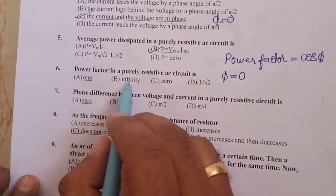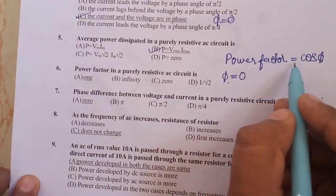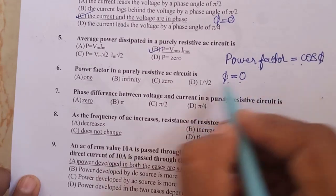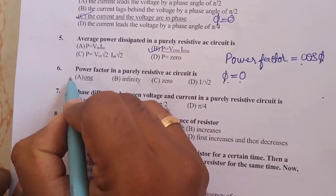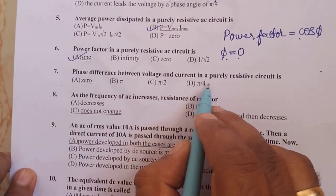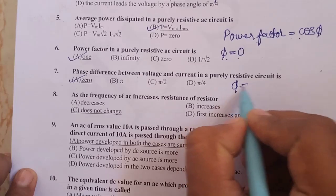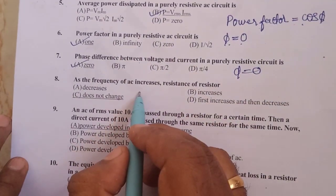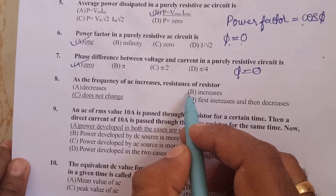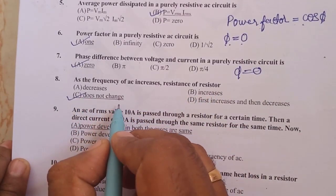Power factor in a purely resistive circuit is given by cos phi. For phi equal to 0 for a resistor, therefore power factor is equal to 1, since cos 0 equals 1. Phase difference between the voltage and the current in a purely resistive circuit is 0. As the frequency of AC increases, resistance of the resistor does not depend on frequency, therefore it does not change.